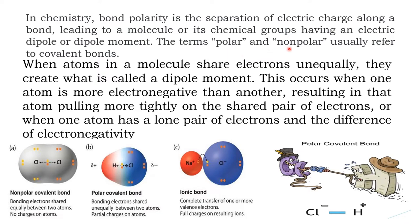The terms polar and nonpolar refer to the polarity of covalent bonds. Whenever two atoms share electrons unequally, they create a moment called dipole moment. This dipole moment occurs because among the two bonded atoms, one may be more electronegative than the other.